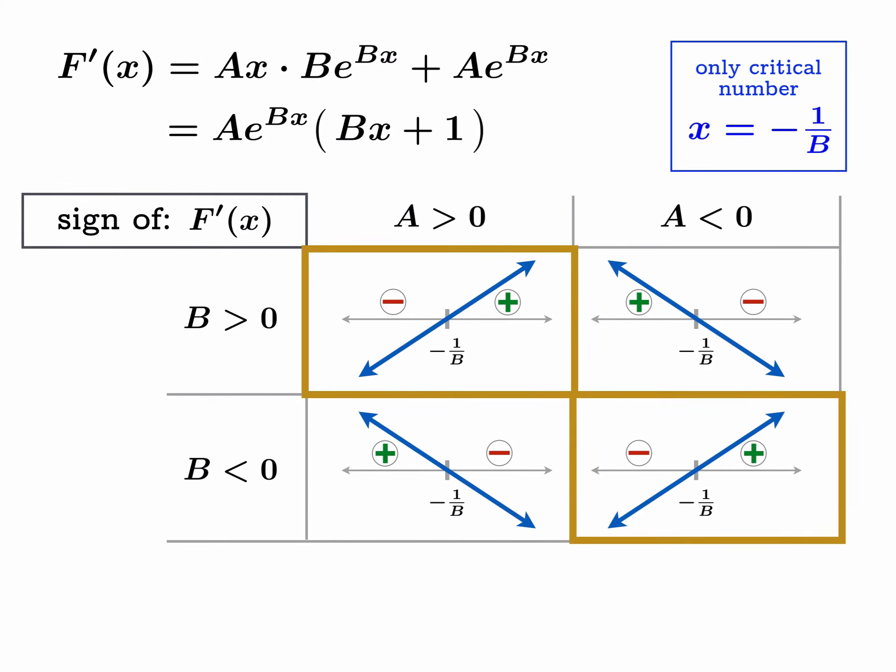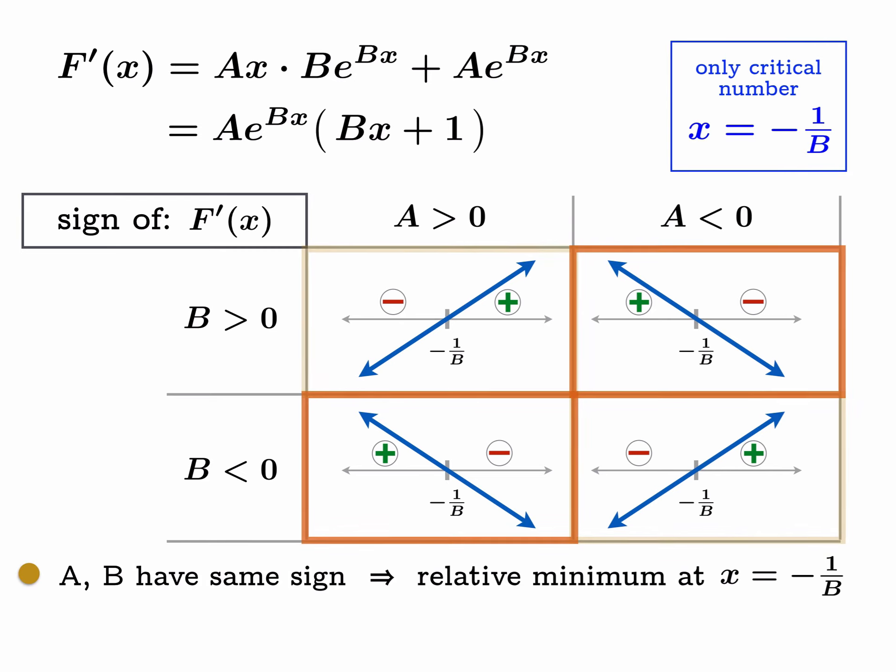In these two cases, the derivative goes from being negative to positive, which means at negative one over B there is a relative minimum. You'll notice the gold boxes—either A and B are both positive or both negative. The other case is here in orange, where the derivative goes from positive to negative. These are relative maxima.